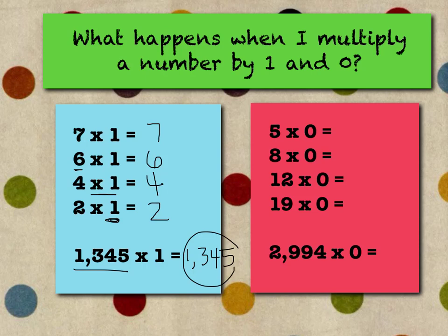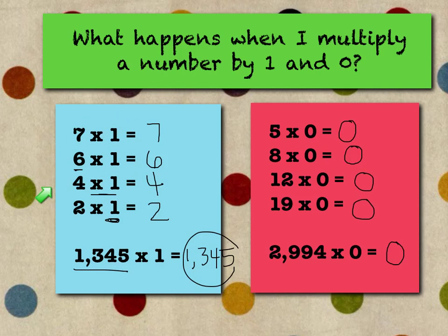Now let's look at the zero property. Any number times zero equals zero — you need to remember that anything times zero is going to equal zero, no matter how big or small. Five times zero is zero. Eight times zero is zero. Twelve times zero is zero. Nineteen times zero is zero. And two thousand nine hundred ninety-four times zero is zero. These are the two simplest properties of multiplication: the identity property, where anything times one is itself, and the zero property, where anything times zero is zero. You can use these to solve multiplication problems automatically.